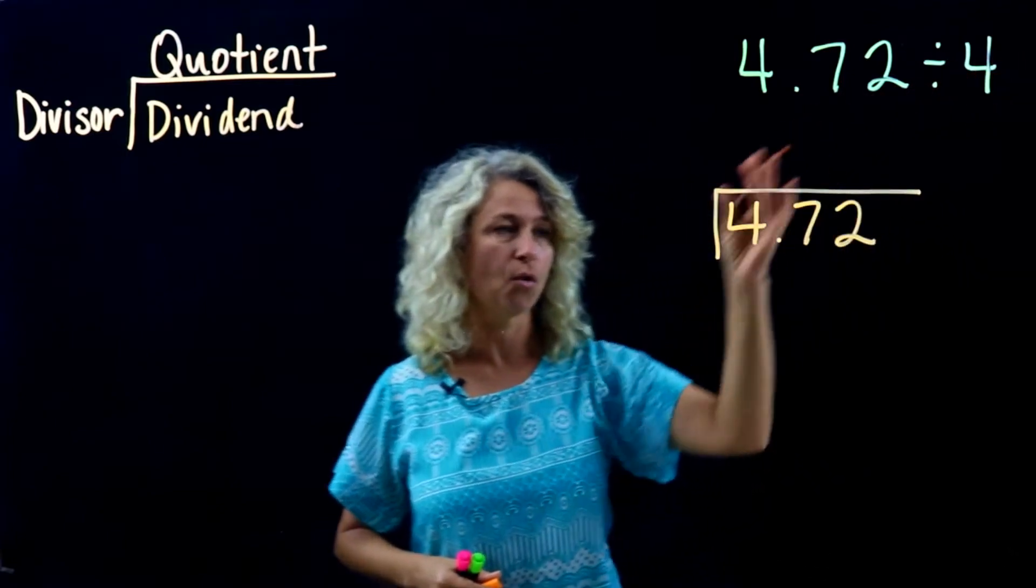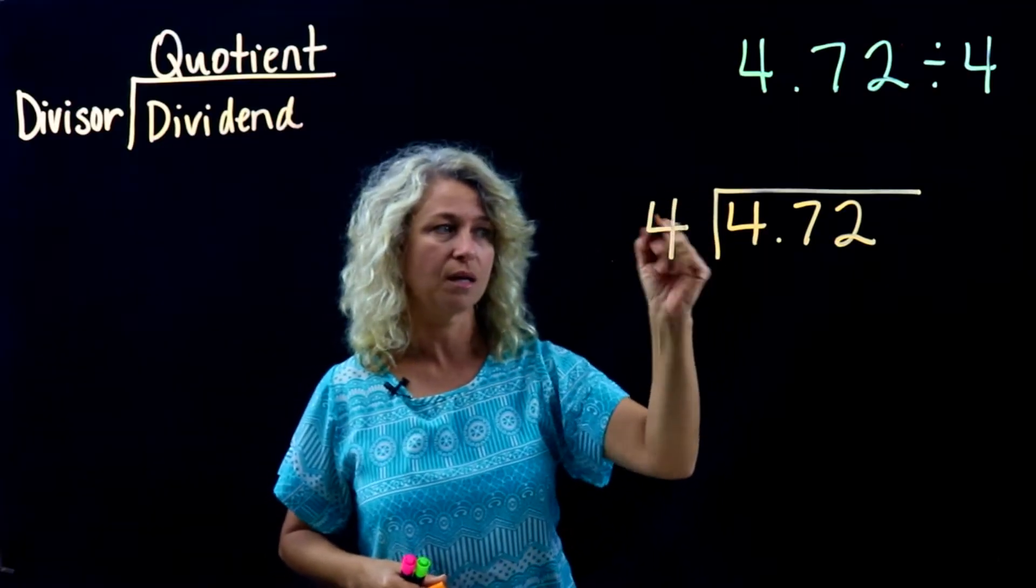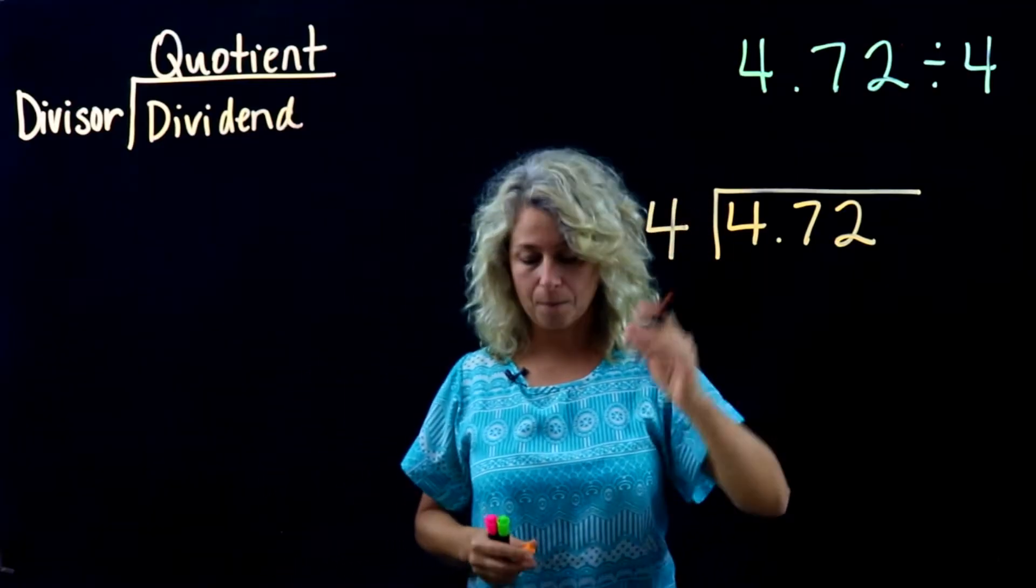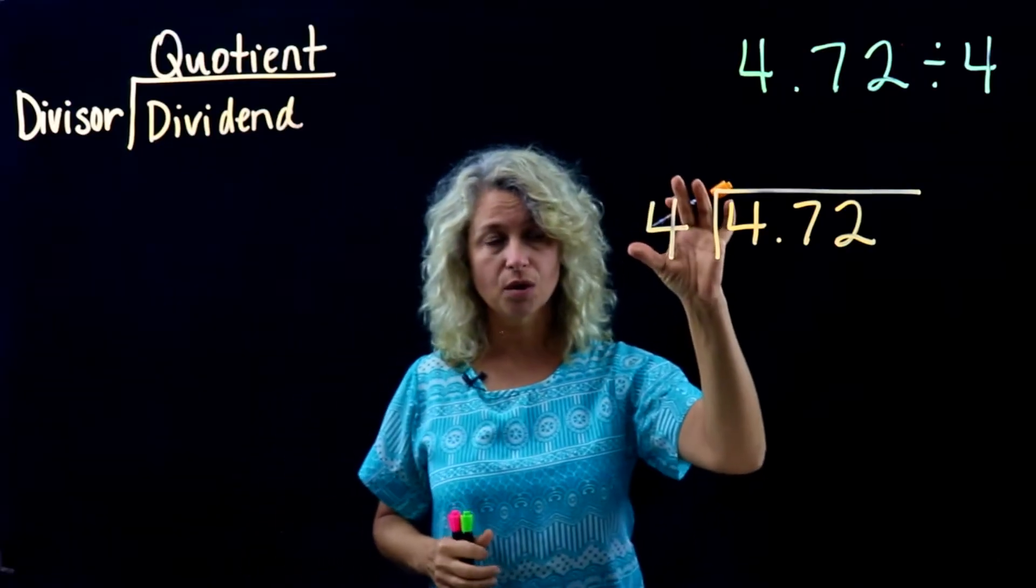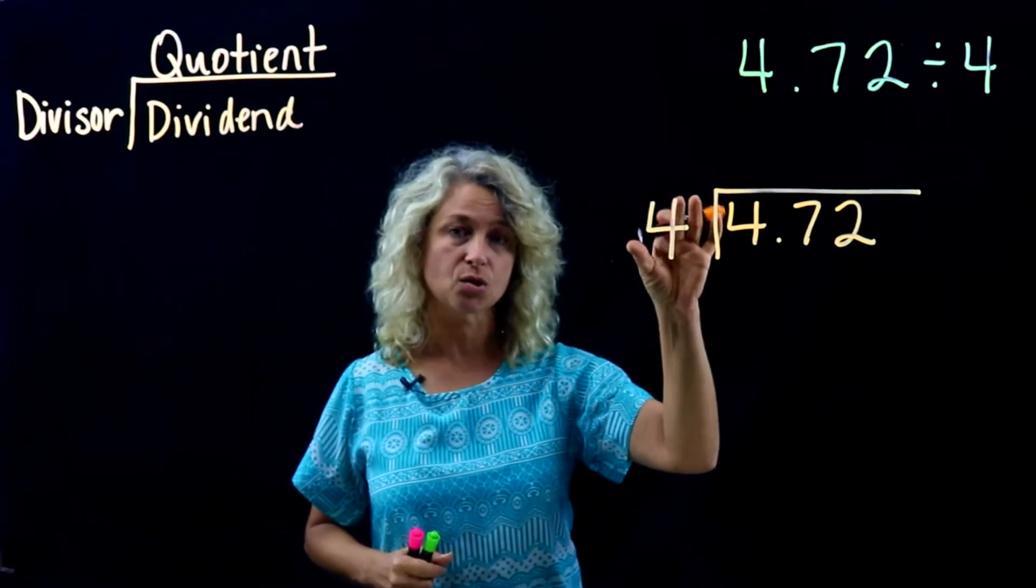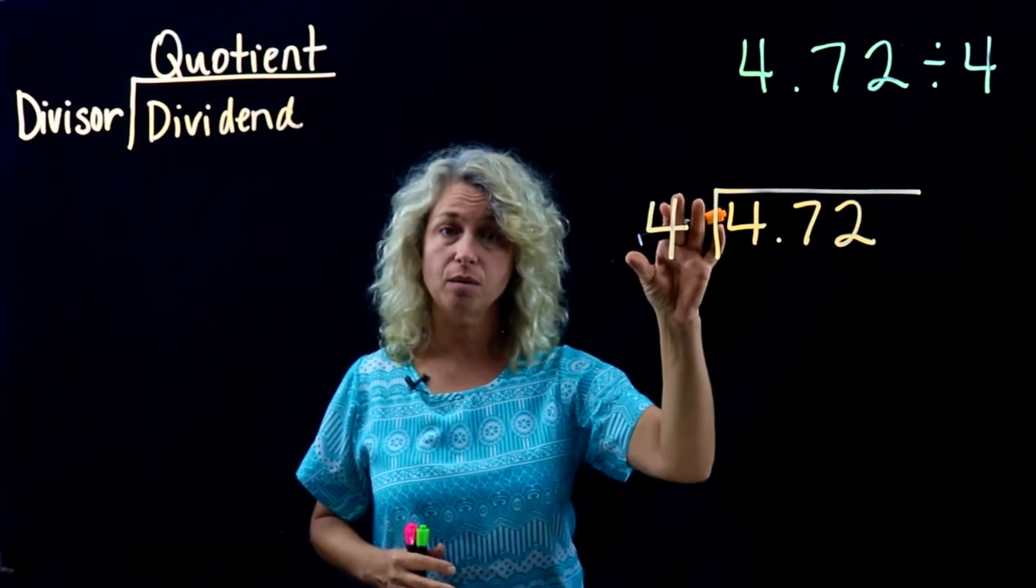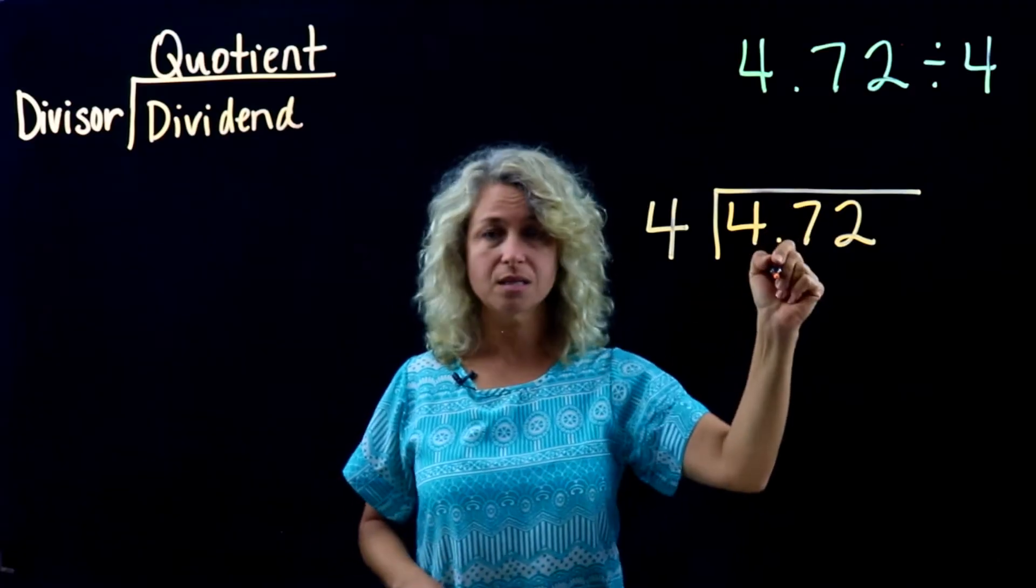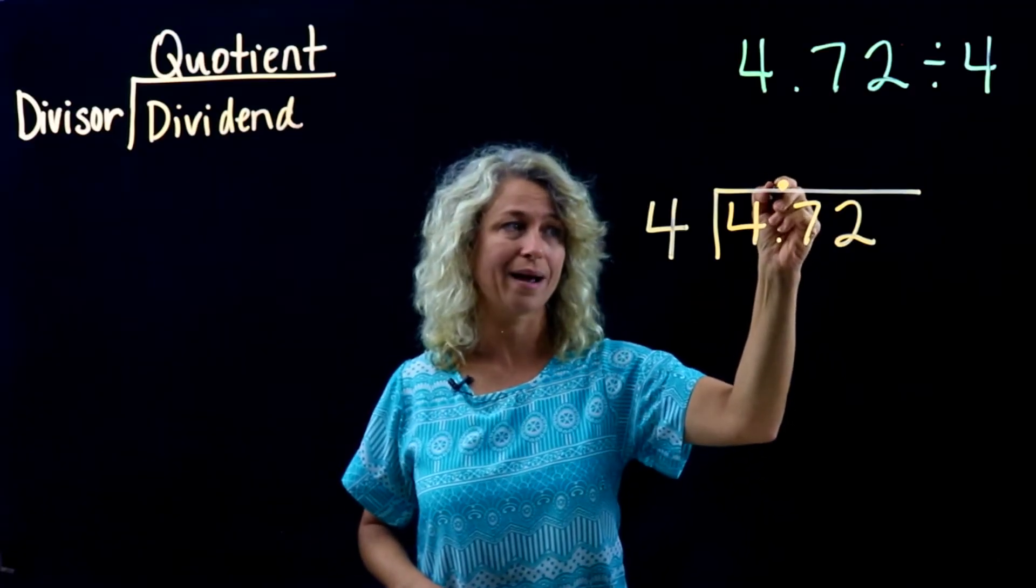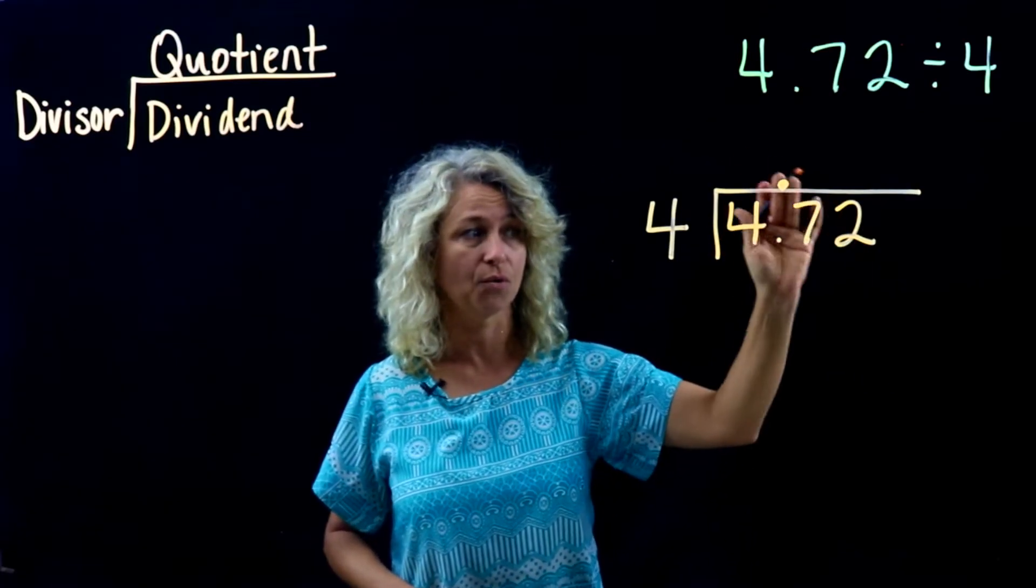Four point seven two goes right here. Four is the divisor and it goes right here. In this first example, I want to make sure that you understand in the divisor we always have to have a whole number, and this is a whole number so we're good. So the decimal point in this situation can just come straight up and we're finished placing it.